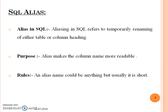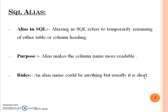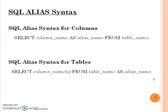The concept of alias was introduced in the aggregate functions. Alias is nothing but a temporary renaming done either to a table or to a column heading. The main purpose of alias is to make the column name more readable. The alias name could be anything, but keeping it short is preferable. Aliases can be applied to a table as well as to a column.